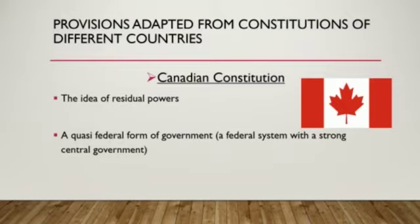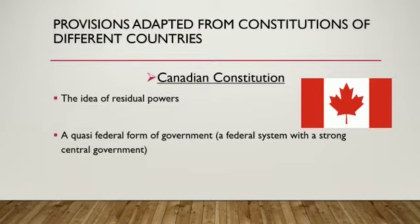Quasi-federalism is a form of government which is federal in structure but unitary in spirit. Although few countries have a clear division of power between state and center, major control lies in the hands of the central government in the form of residual powers. The Constitution of India is quasi-federal in nature and not strictly federal. In the words of D.D. Basu, the Constitution of India is neither purely federal nor unitary, but it is a combination of both.